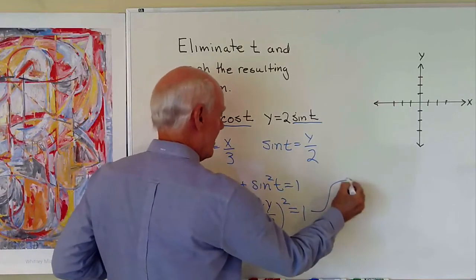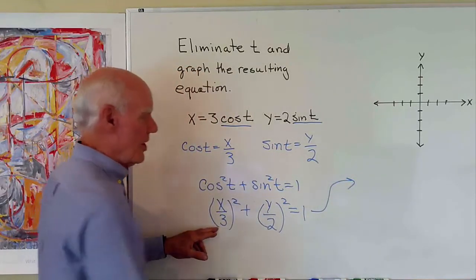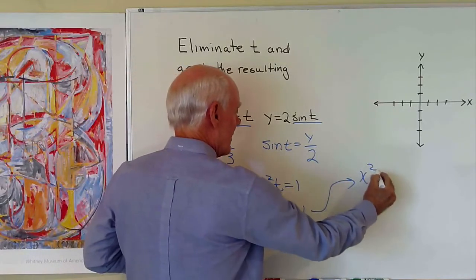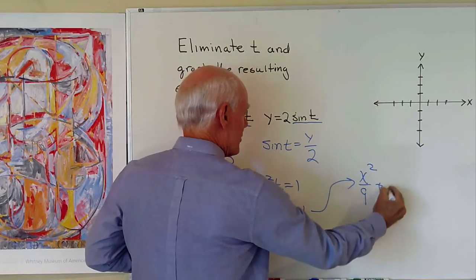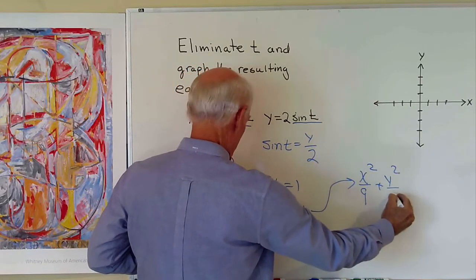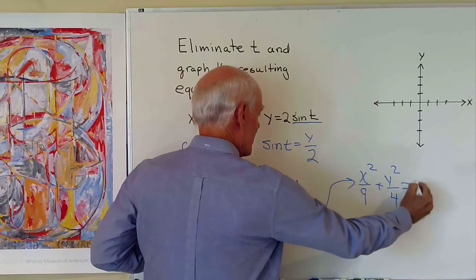So what do I get here? I end up with x squared over nine plus y squared over four is equal to one.